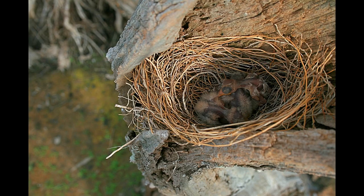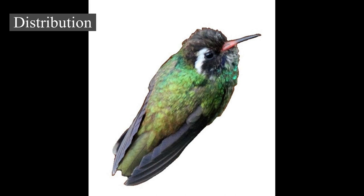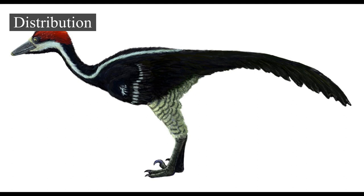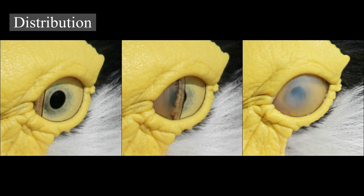Distribution. Birds live and breed in most terrestrial habitats and on all seven continents, reaching their southern extreme in snow petrel breeding colonies up to 440 kilometers (270 mi) inland in Antarctica. The highest bird diversity occurs in tropical regions. It was earlier thought that this high diversity was the result of higher speciation rates in the tropics; however, recent studies found higher speciation rates in the high latitudes that were offset by greater extinction rates than in the tropics. Many species migrate annually over great distances and across oceans. Several families of birds have adapted to life both on the world's oceans and in them, and some penguins have been recorded diving up to 300 meters (980 ft) deep.